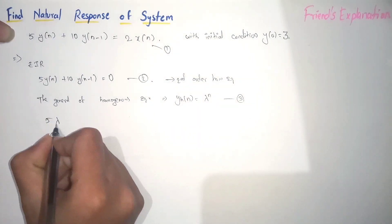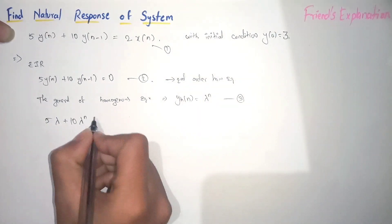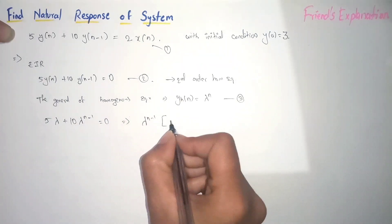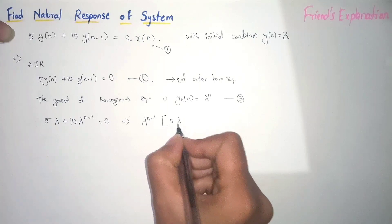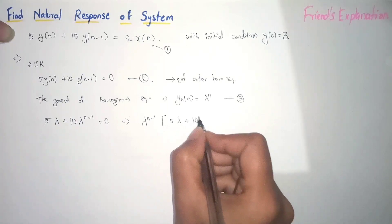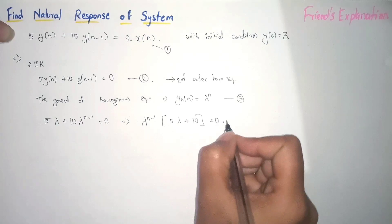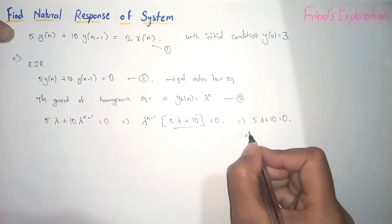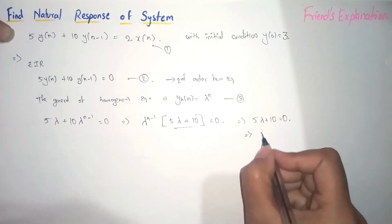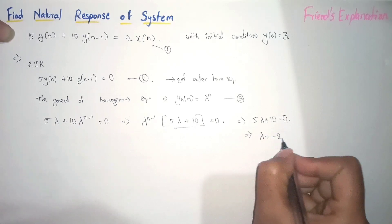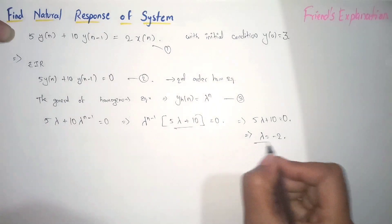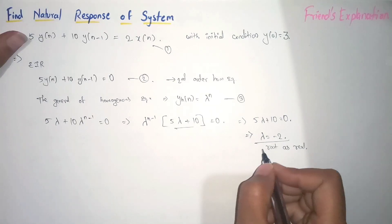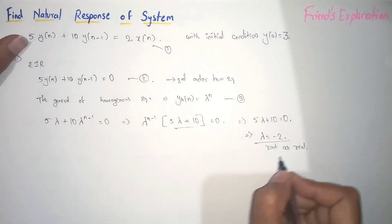Substituting, we get 5λ^n + 10λ^(n−1) = 0. Taking λ^(n−1) common, we get λ^(n−1) · (5λ + 10) = 0. Setting the characteristic equation to zero gives 5λ + 10 = 0, so λ = −2. We have found the root, which is real.